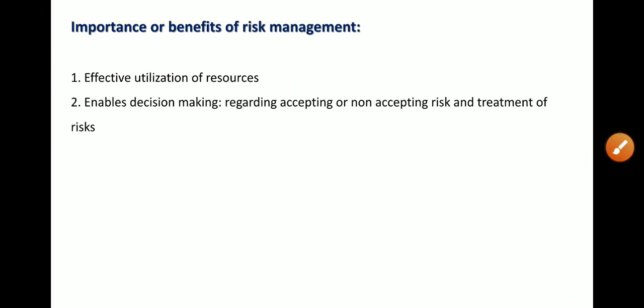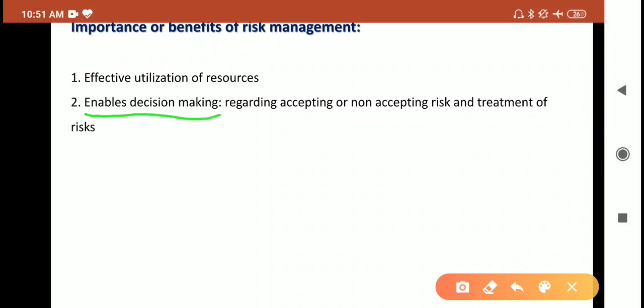The second benefit is it enables decision making. Risk management helps management to take decisions from time to time regarding accepting or non-accepting risk and treatment of the risk. In the organization, we have acceptable and non-acceptable risks. Every non-acceptable risk requires certain treatment — that is risk reduction, risk retention, risk evaluation, or risk mitigation. The decision whether to treat that risk or not, using various risk mitigation strategies, requires risk management. That is what makes it very important in the organization.